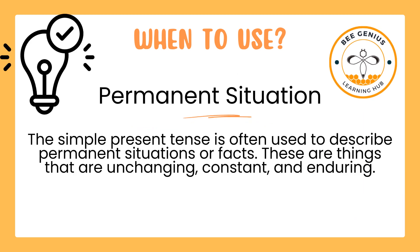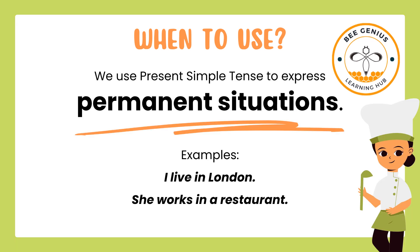We also use the simple present for permanent situations. The simple present tense is often used to describe permanent situations or facts — things that are unchanging, constant and enduring. Examples: I live in London. She works in a restaurant.